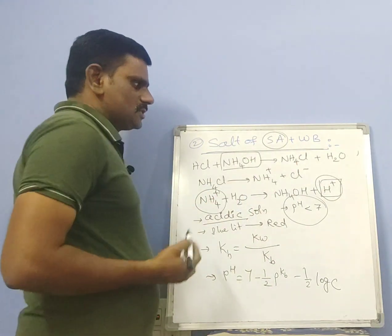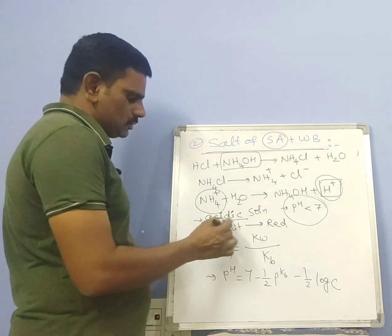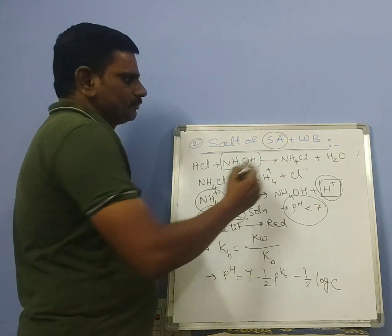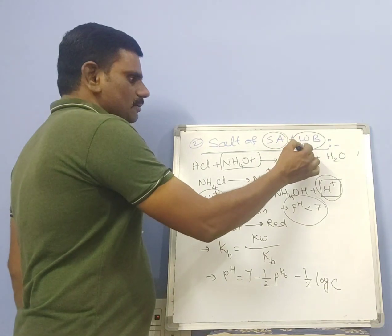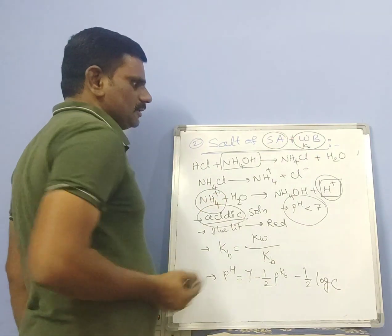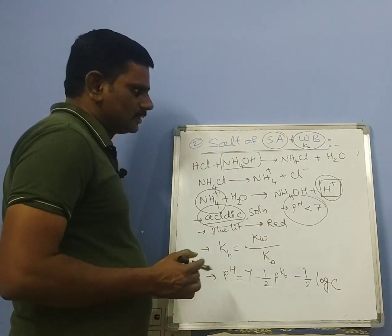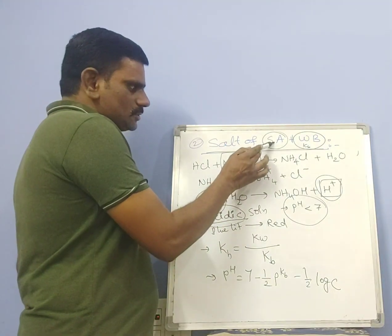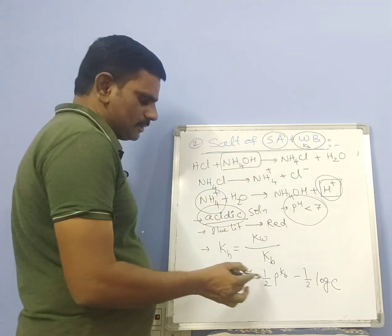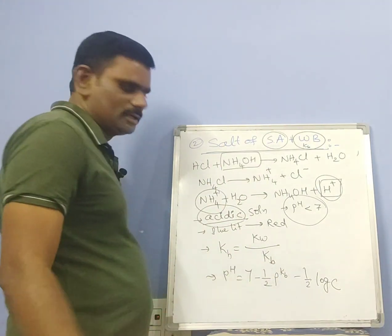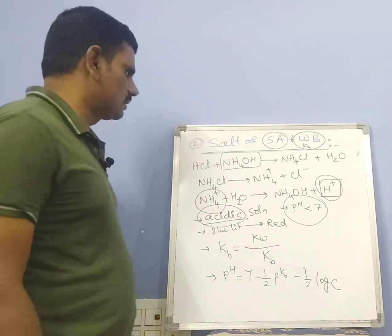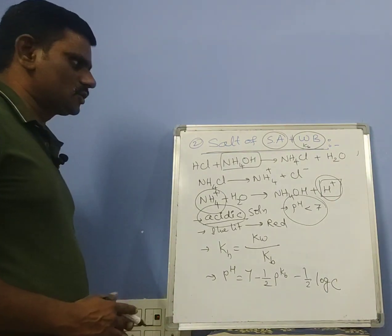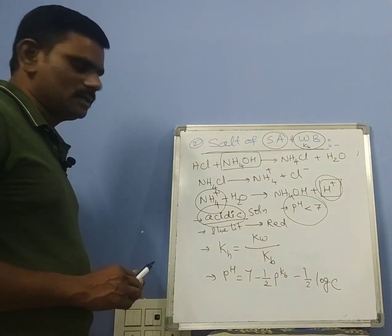By looking at the heading 'strong acid and weak base,' we can predict: since the acid is stronger, the solution is acidic. Because the base is weaker, kb is used in kH = kw/kb. Since the solution is acidic, pH is less than 7, reflected by the minus signs in the pH equation: pH = 7 − ½pKb − ½log c.